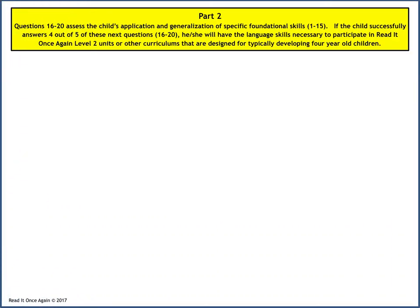This begins Part 2 of the curriculum-based assessment. Questions 16 through 20 assess the child's application and generalization of specific foundational skills 1 through 15. If the child successfully answers 4 out of 5 of these questions, he or she will have the language skills necessary to participate in Read It Once Again Level 2 units or other curriculums designed for typically developing 4-year-old children.